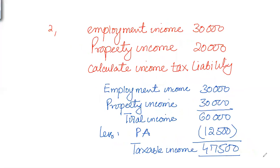Now let's move to another question. In this example, we have employment income, which is non-saving income, as well as property income, which is also non-saving income. So two non-saving income sources are combined together.